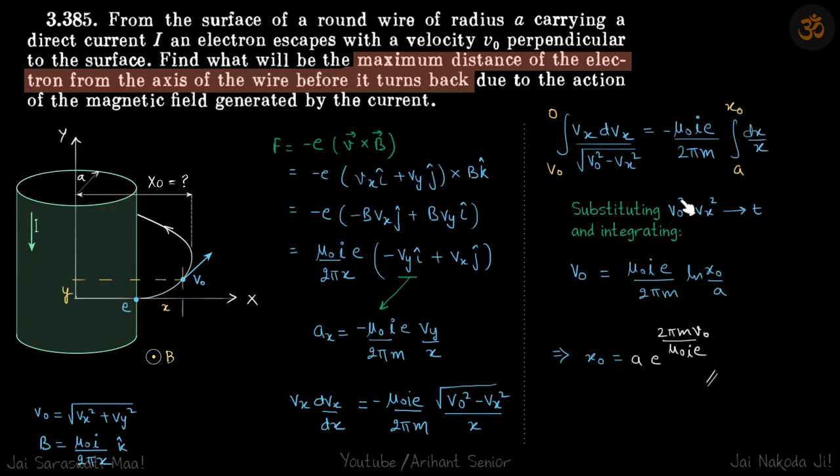Substituting v0 square minus vx square as q so we don't get confused with time, it will become an easy integral. Solving it you will get v0 equals mu0 i e by 2 pi m ln x0 by a. So from here you can find x0, which will be our answer.